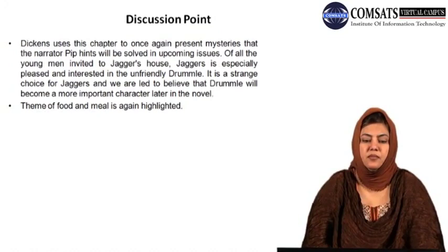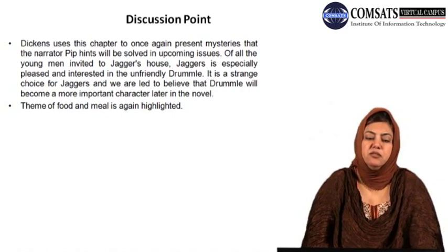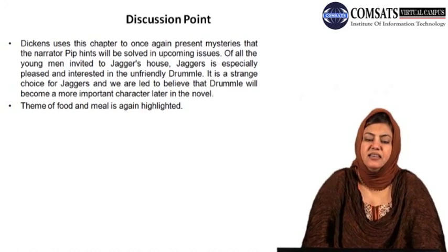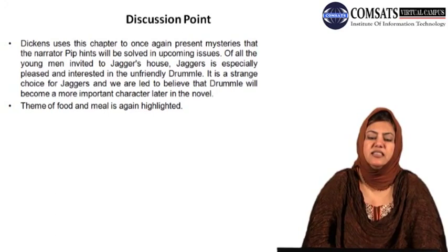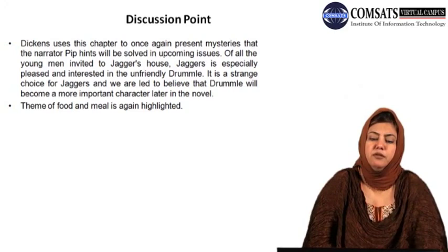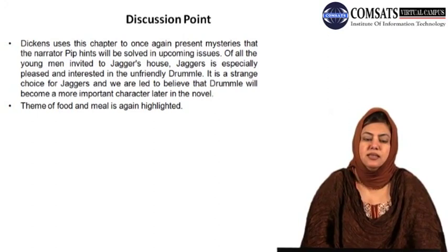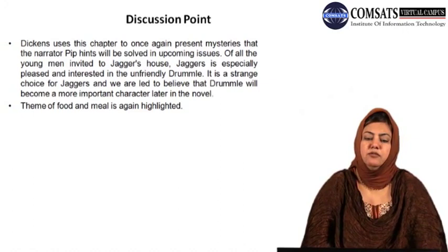Dickens uses Chapter Seven to once again present mysteries that will be solved in upcoming chapters. Of all the young men invited to Jaggers's house, Jaggers is specially pleased and interested in the unfriendly Drummle. Interestingly, though he advised Pip to stay away from Drummle, he asserted that he himself liked Drummle. This strange choice leads us to believe that Drummle will become a more important character later in the novel.